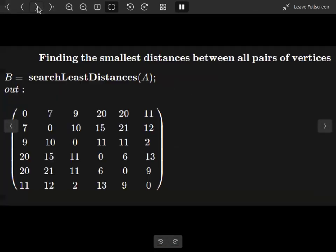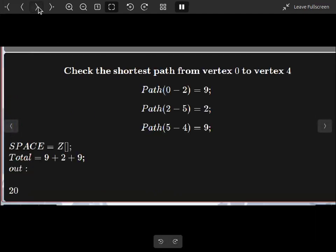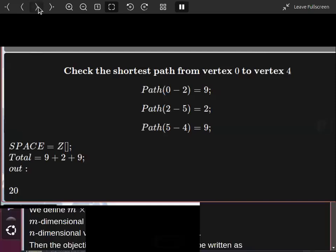Another question: find the smallest distance between all pairs of vertices. And this is the solution. You can see here all distances in this matrix. You can check the result.